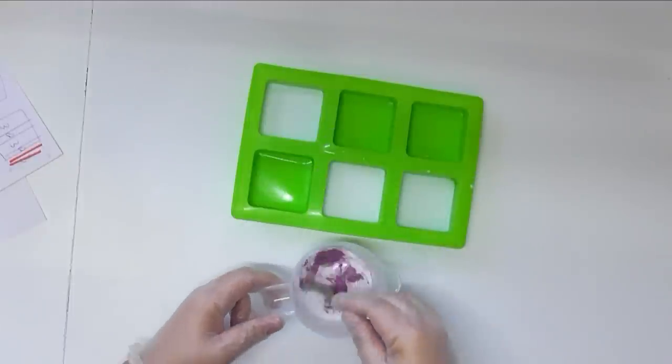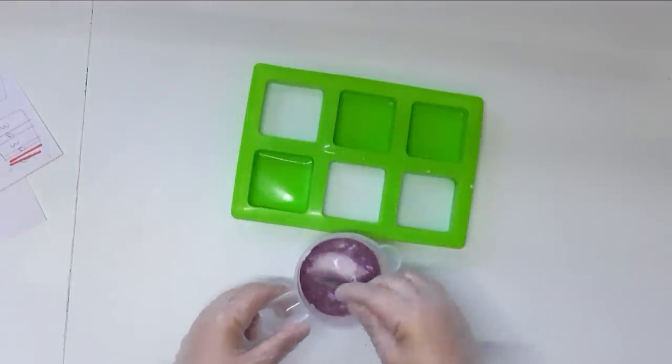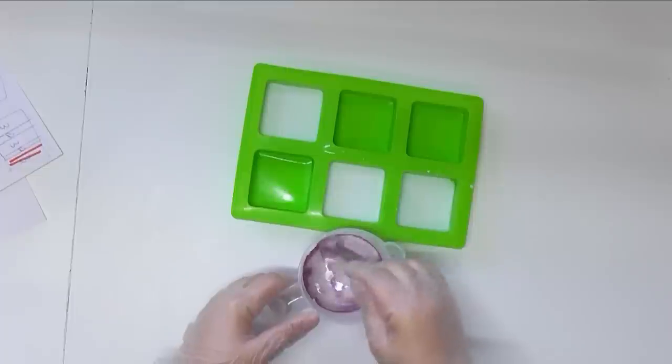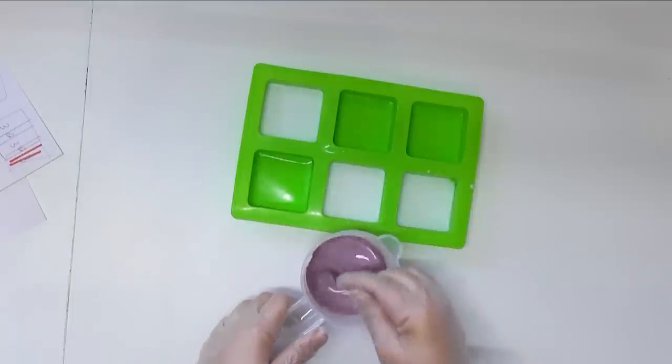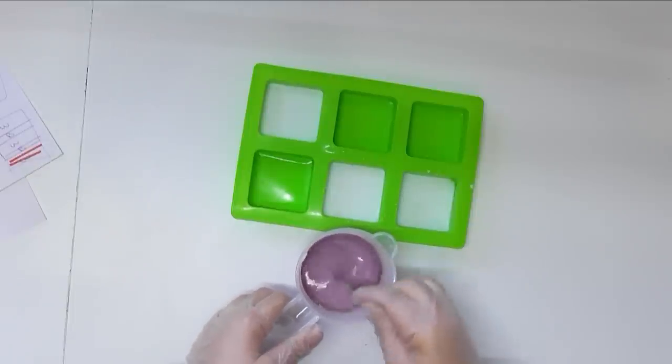For the next one I have added some Bubblegum Bliss mica into this white and I'm just going to stir that in, and then I'm going to pour this particular one which is going to be my pink, black, white, black, pink licorice all sorts.